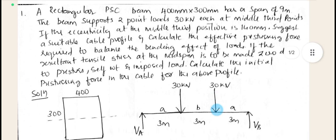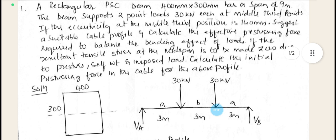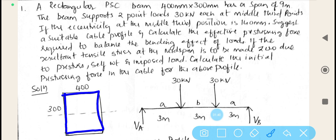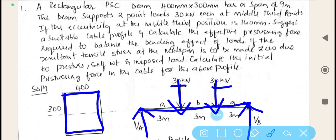For the given data, let us plot the sketch. It is a rectangular PSC beam, 400 by 300, and it is carrying two point loads. It is a simply supported beam like this, carrying two point loads, 30 kilonewton, 30 kilonewton.